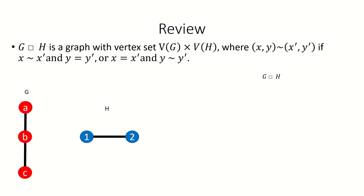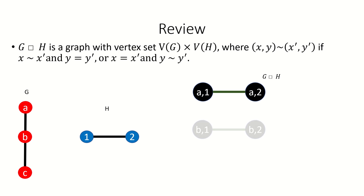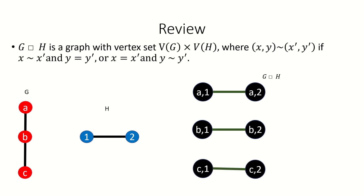Intuitively, the Cartesian product ends up copying one factor graph for every vertex in the other factor graph, and then linking the vertices of each copy according to the structure of the other factor graph.